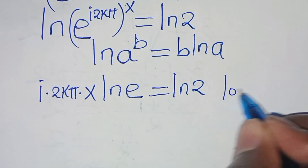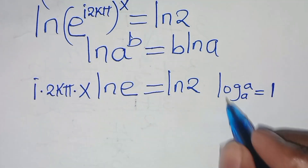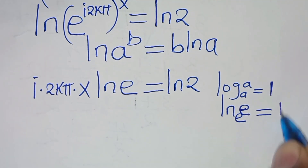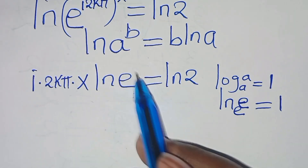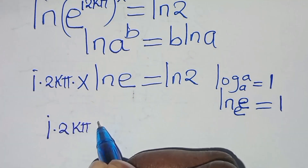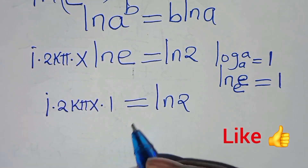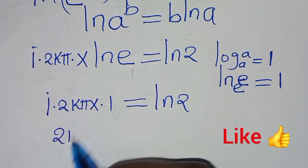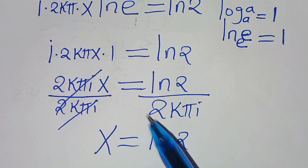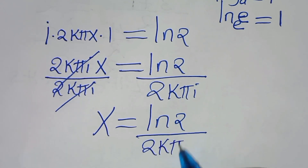Given that log base a of a equals 1, this applies also to the natural log: ln(e) equals 1. Substituting ln(e) with 1, we now have i·2kπ·x equals ln(2). Dividing both sides by 2kπi, we get x equals ln(2) divided by 2kπi.